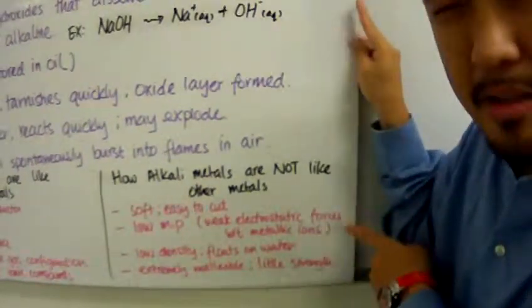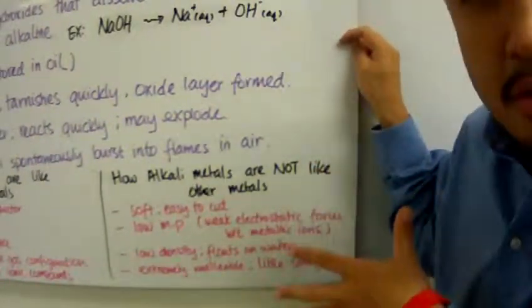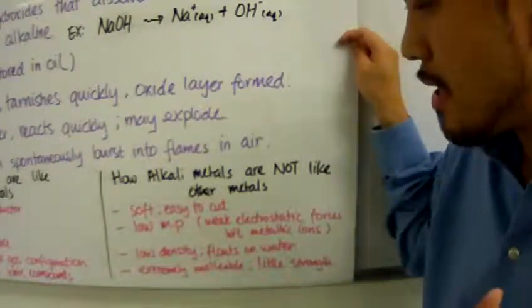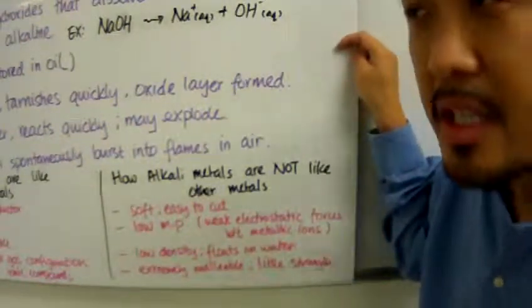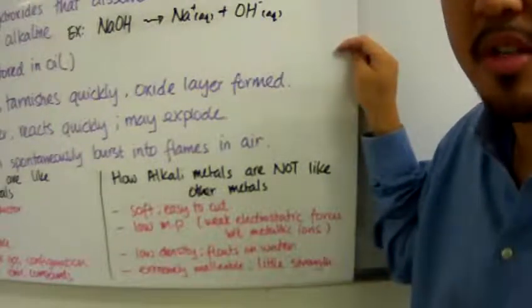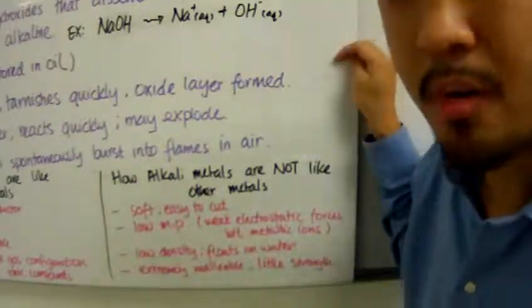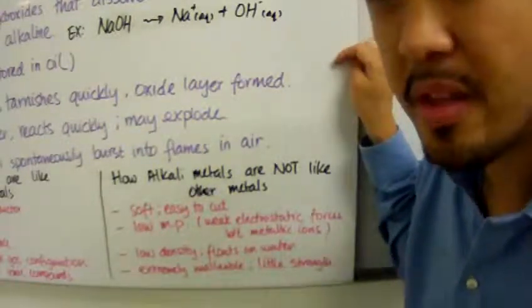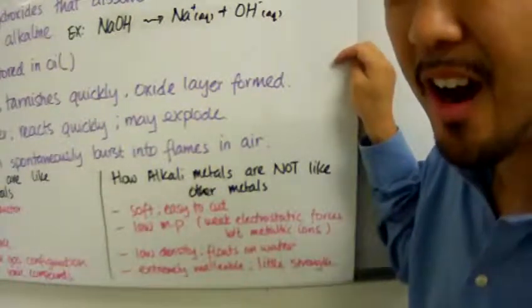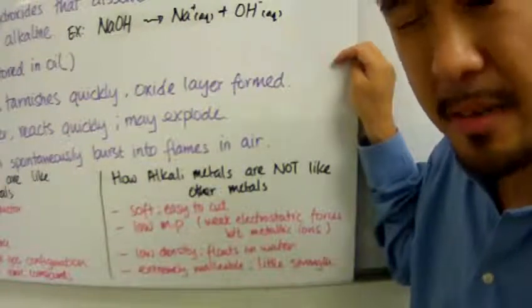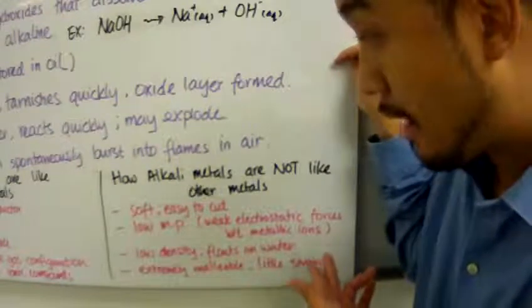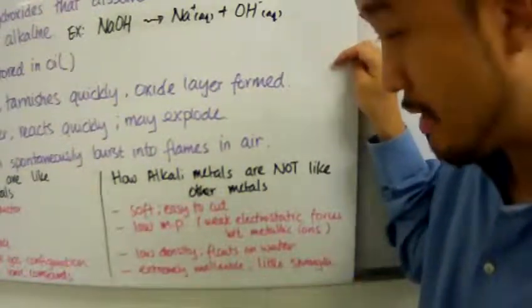How are alkali metals different from other metals? Group 1 metals are very soft and easy to cut—you can even use a butter knife. Cold butter is harder to cut than alkali metals!